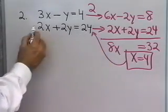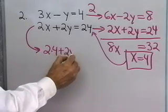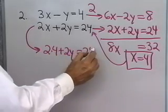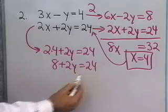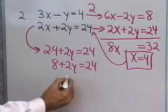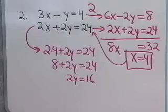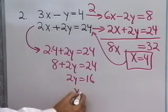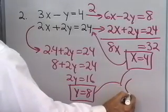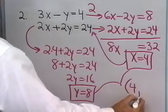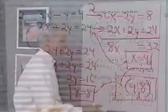I'll substitute x equals 4 back into the equation: 2 times 4 plus 2y is equal to 24. That's 8 plus 2y is equal to 24. Subtract 8 from both sides: 2y is equal to 16. Divide both sides by 2, and y is equal to 8. That's the y-coordinate of the point of intersection. The solution to that system is the ordered pair x equal to 4, y equal to 8.